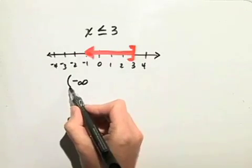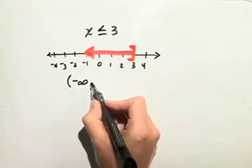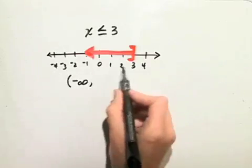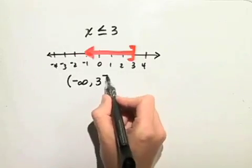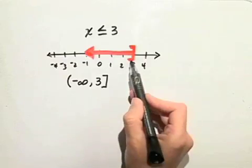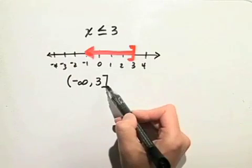We use parentheses around positive or negative infinity. So it goes from negative infinity and stops at 3, which is included. Because we had the square bracket on the number line, we'll use it in the interval notation as well.